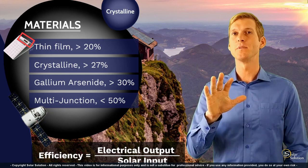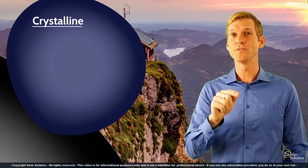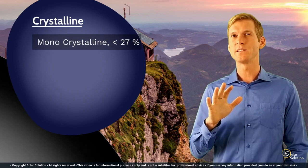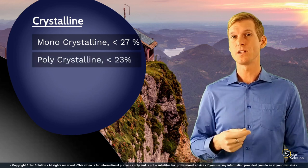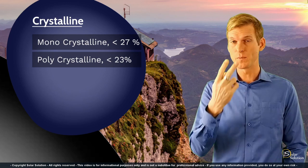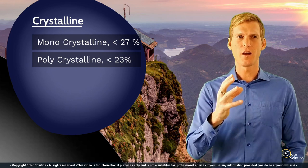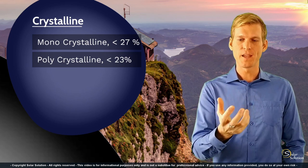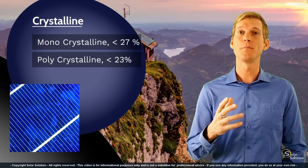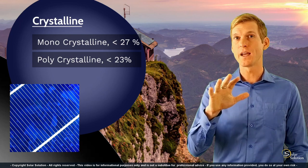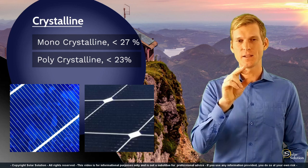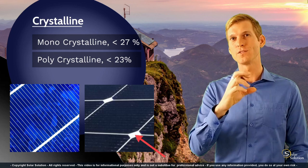Let's zoom in on crystalline materials, since this is the type you'll most likely use. There are two kinds: monocrystalline, which goes up to 27% efficiency, and polycrystalline, which goes up to 23%. It's usually easy to distinguish them visually — polycrystalline panels are often a bit brighter, more bluish, with a typical flaky appearance where you can see individual crystals. Monocrystalline panels are much darker with an even color throughout, and you can also recognize them by the rounded or cut-off corners of the individual solar cells.